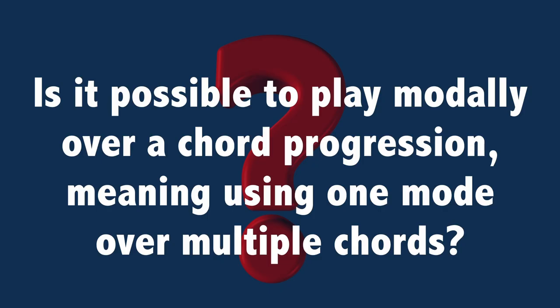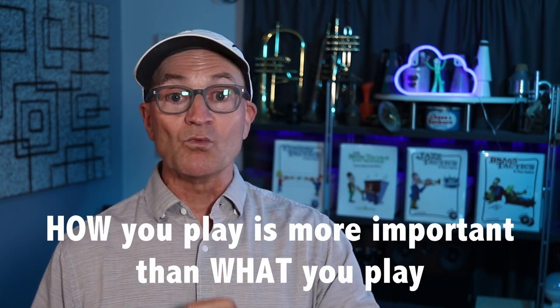Is it possible to play modally over a chord progression, meaning using one mode over multiple chords? In general, finding a single scale that works over multiple chords is a good strategy. For example, you can improvise over 2-5-1 by thinking only of the key, as defined by the Ionian or major scale that produces the one chord. I don't know if that's the same thing as playing modally, but it reduces or simplifies the amount of information that your brain is trying to process. That allows you to focus more on what you hear than what you think, and on how you play rather than what you play.